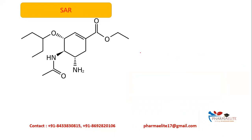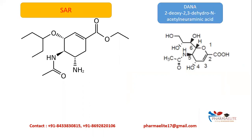This is the structure of Oseltamivir. Its numbering is done in accordance with the structure known as DANA, which stands for 2-deoxy, 2-3-dehydro, and N-acetyl neuraminic acid. This drug was the first drug in the series of neuraminidase inhibitors, and Oseltamivir's numbering is done in accordance with this drug. The carbons are numbered 1, 2, 3, 4, 5, 6.